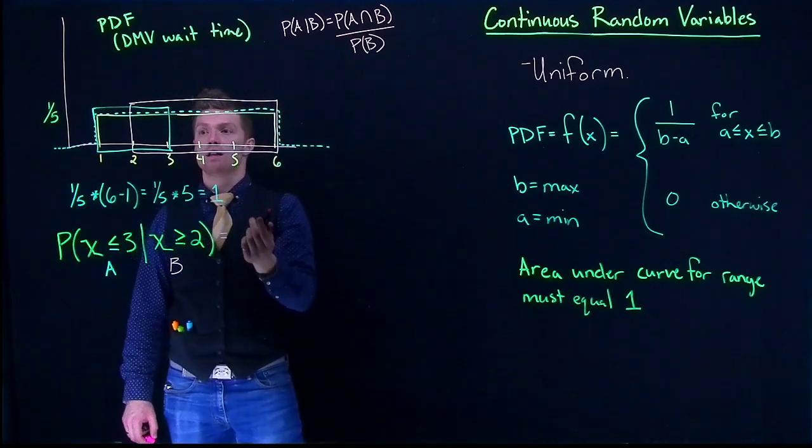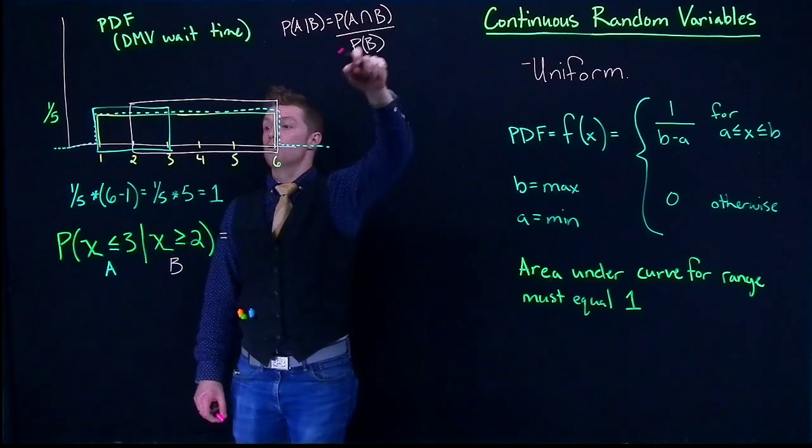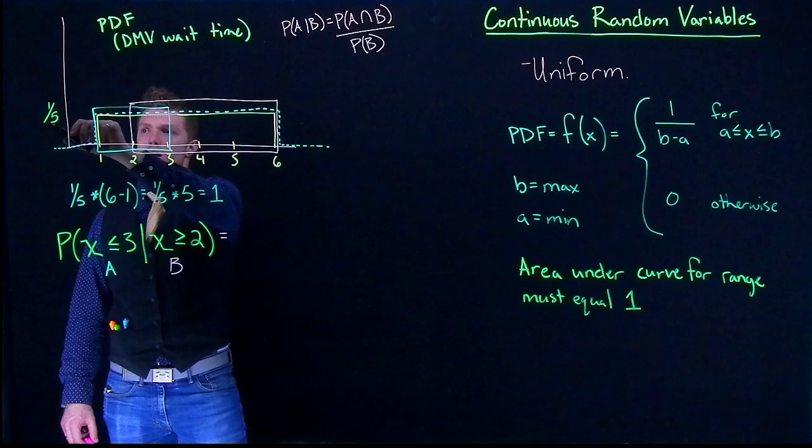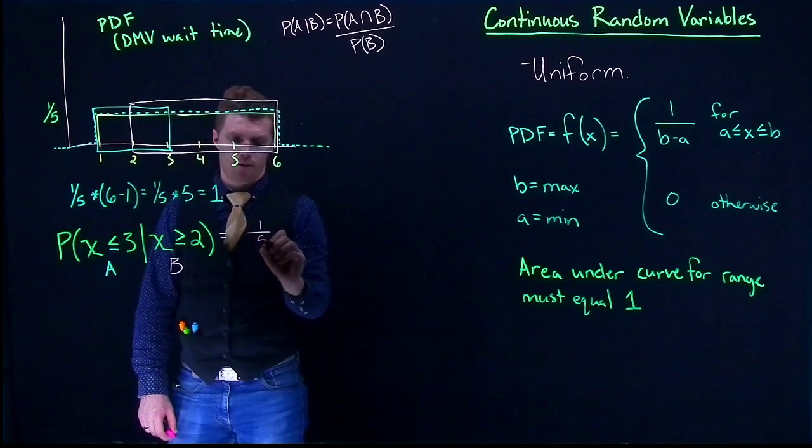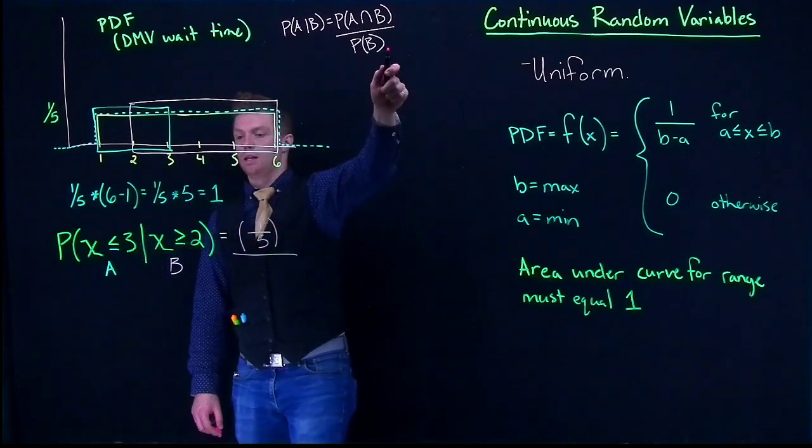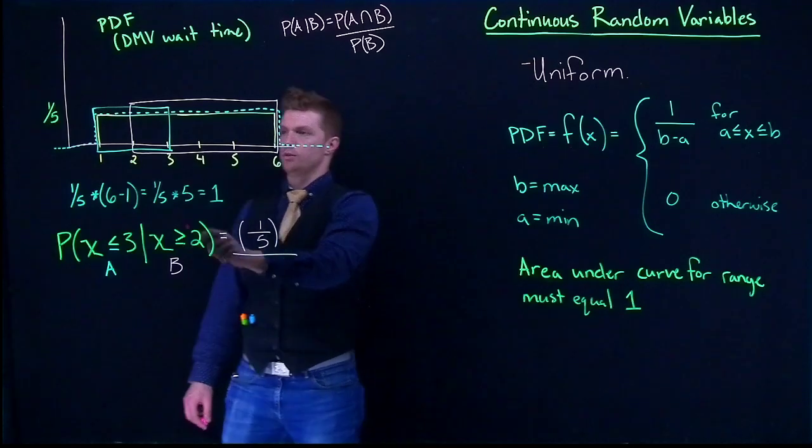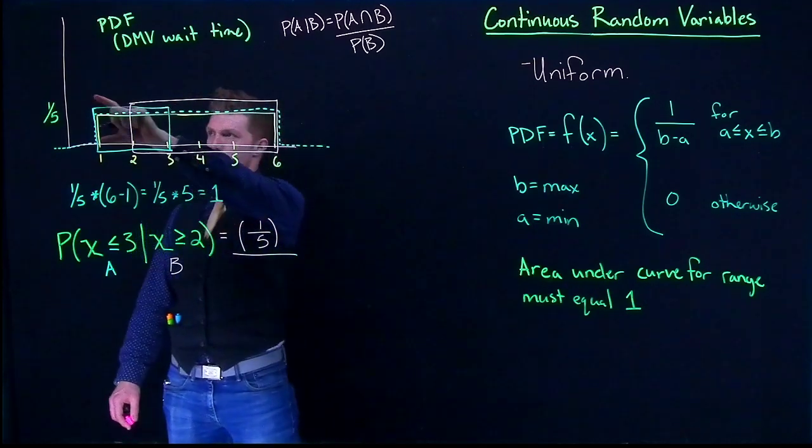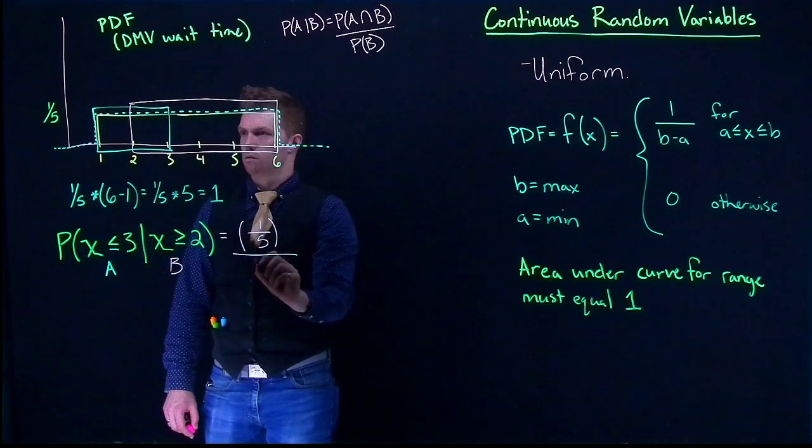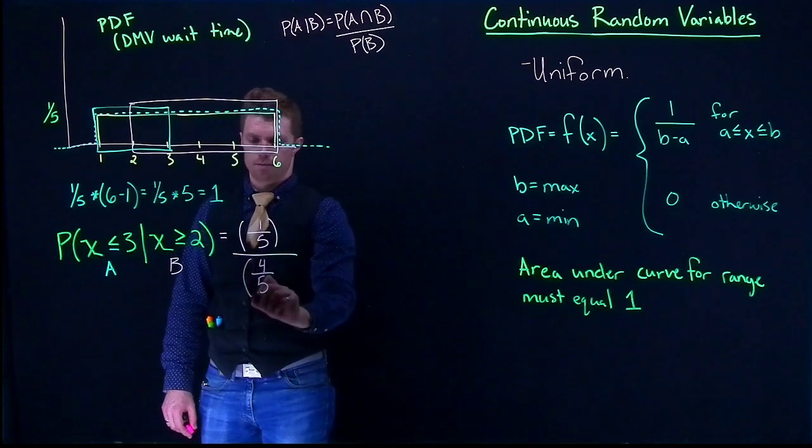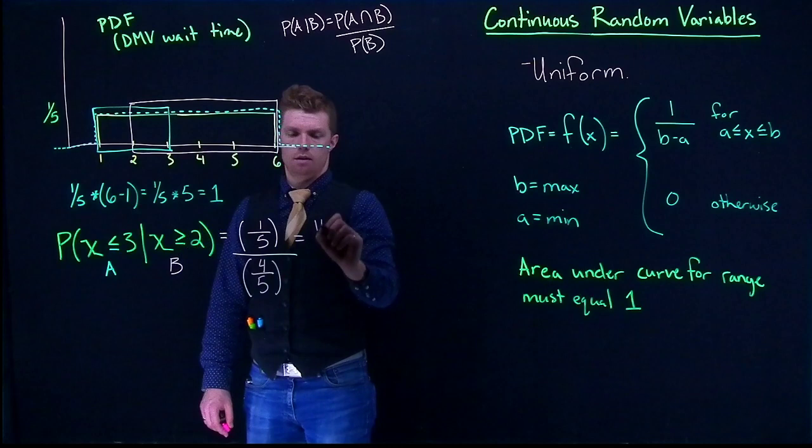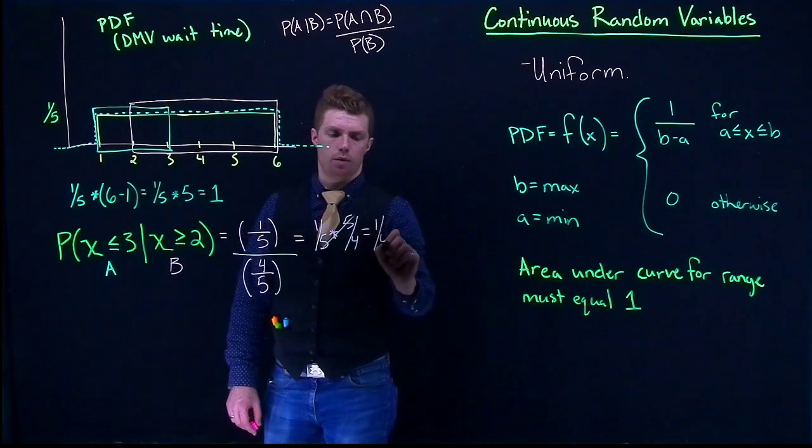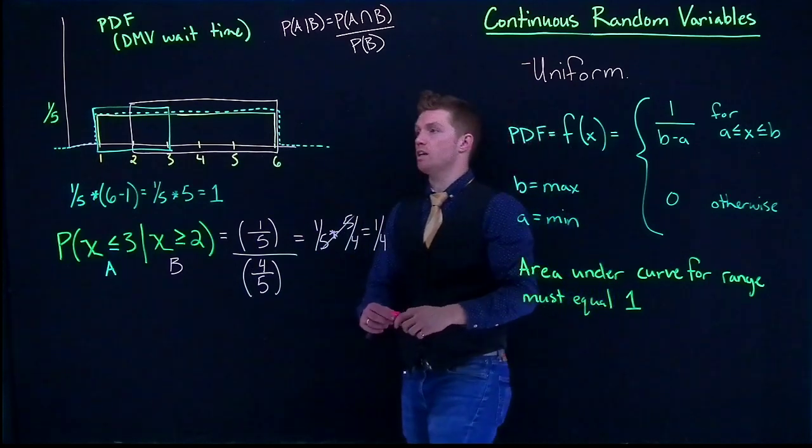Let's look at the intersection. What's the probability where they intersect, where both A and B are true? We have this little section right here. So from 2 to 3, that's just the range of 1 multiplied by our height of 1 fifth. And we're going to have 1 fifth. We're going to divide by the probability of B. Our probability of B was pink being greater than or equal to 2. So that probability is going to be 1, 2, 3, 4. Our base is 4 multiplied by 1 fifth, which here we go is 4 divided by 5. And that guy is then 1 fifth multiplied by 5 fourths. 5's go away. And that equals 1 fourth.